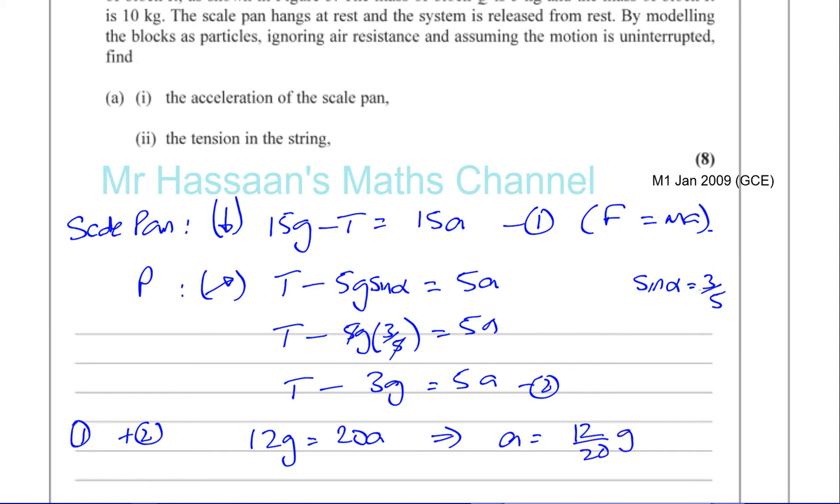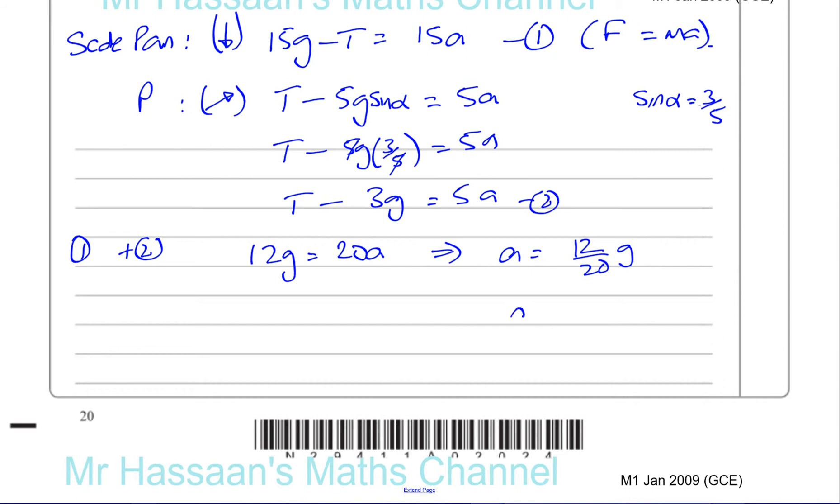So I'm left with a equals 12 over 20 g, which I can simplify. So a is going to be, what number goes into both of those? 12 divided by 4 is 3, and 20 divided by 4 is 5. So 3 fifths g.